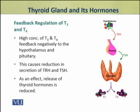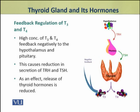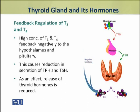The release of T3 and T4 exerts a negative feedback on the hypothalamus and pituitary. As a result, TRH and TSH production is reduced, which in turn reduces the production of thyroid hormones.